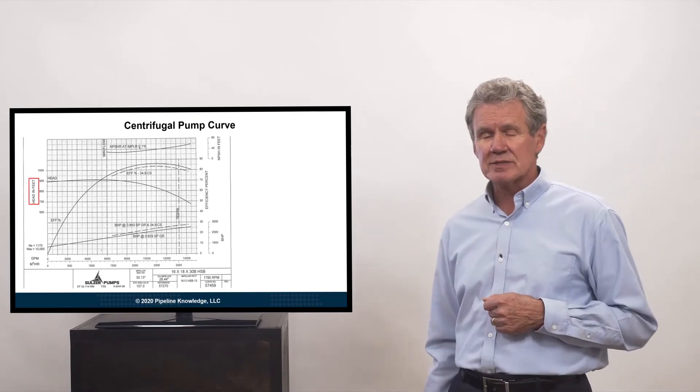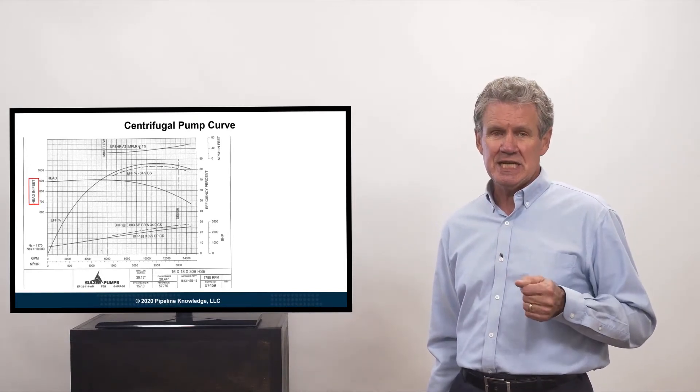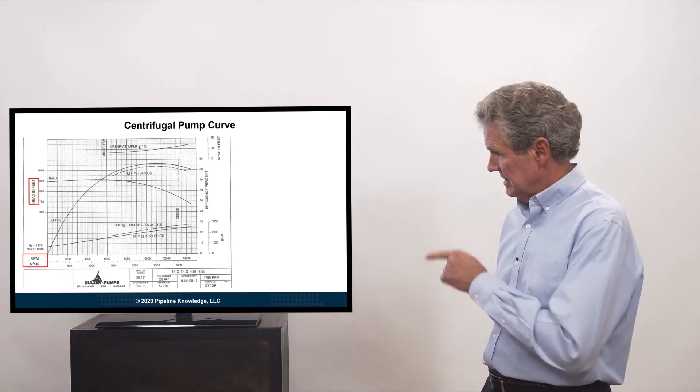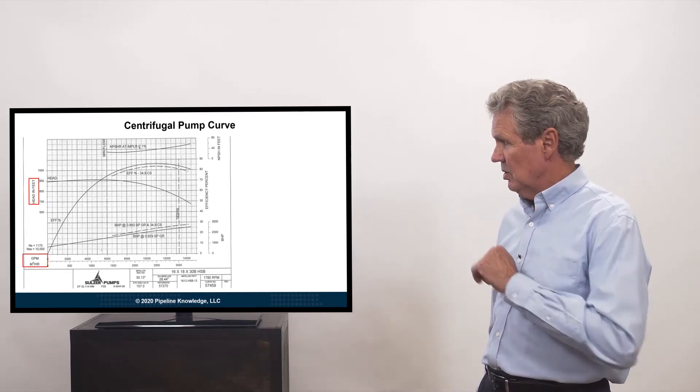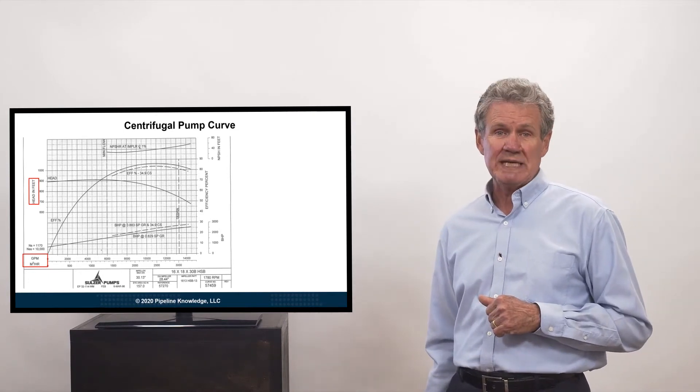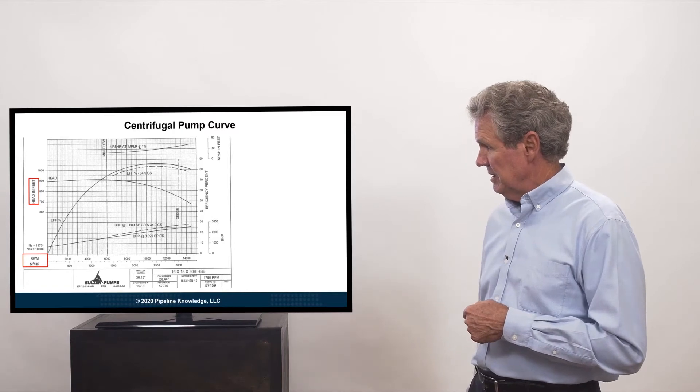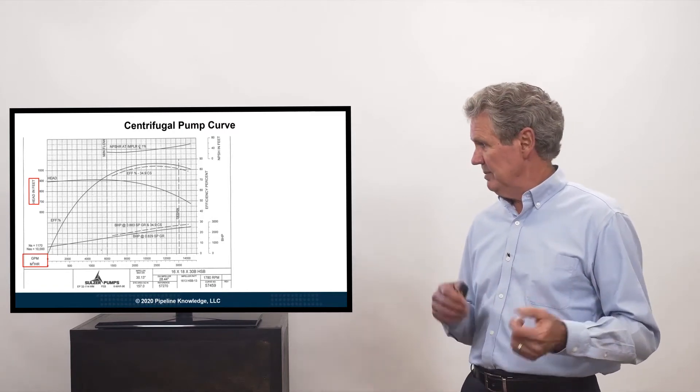So if we look over there in the red box, the vertical axis is head in feet or in psi. Either one is fine. Down there, the horizontal axis, we have the rate, barrels per hour, gallons per minute, meters cubed per hour, whatever it may be.